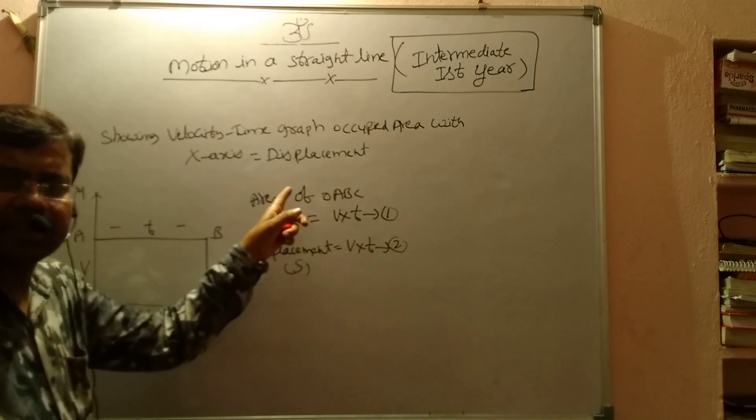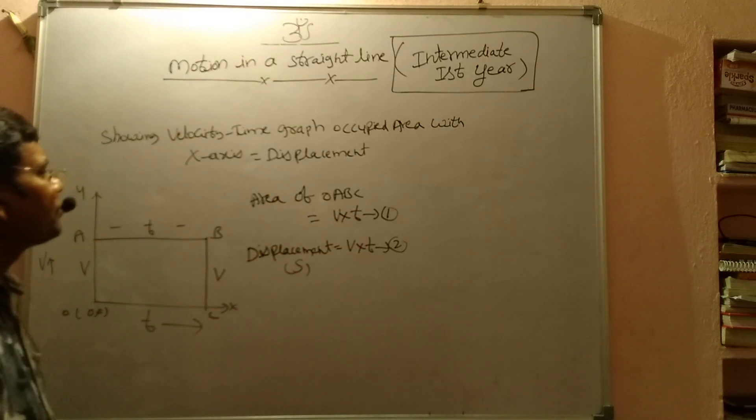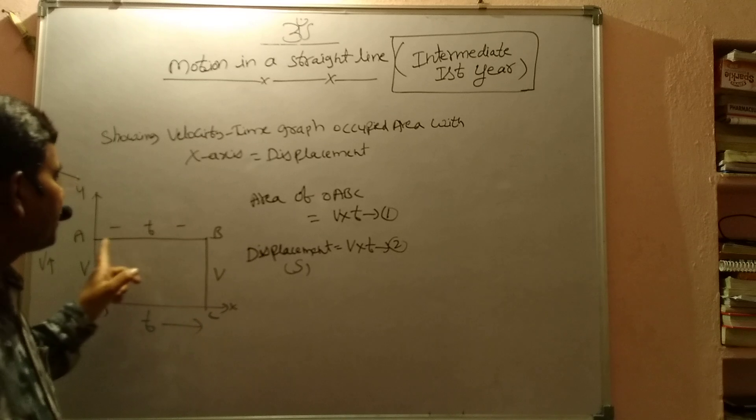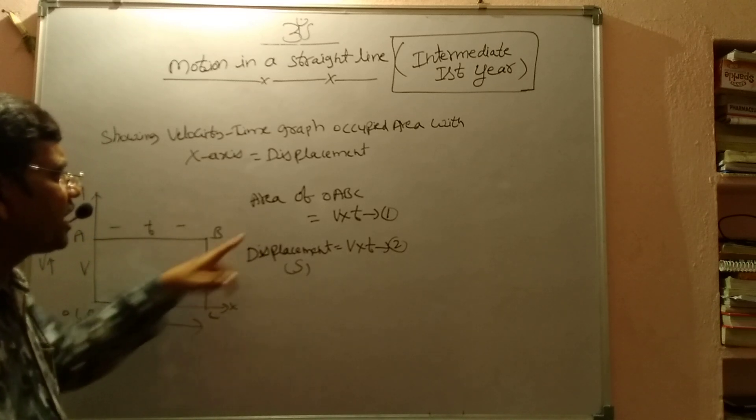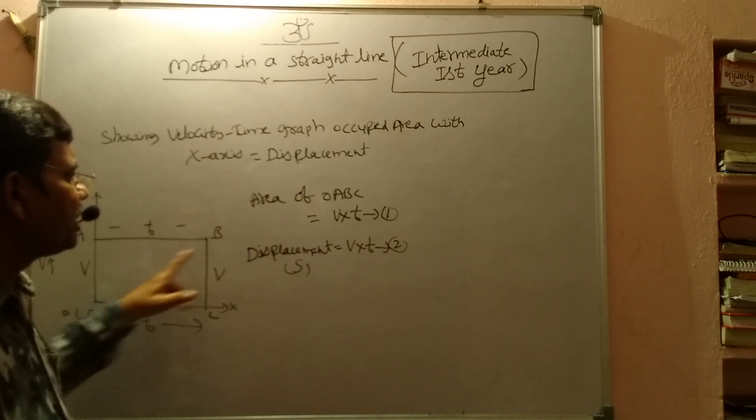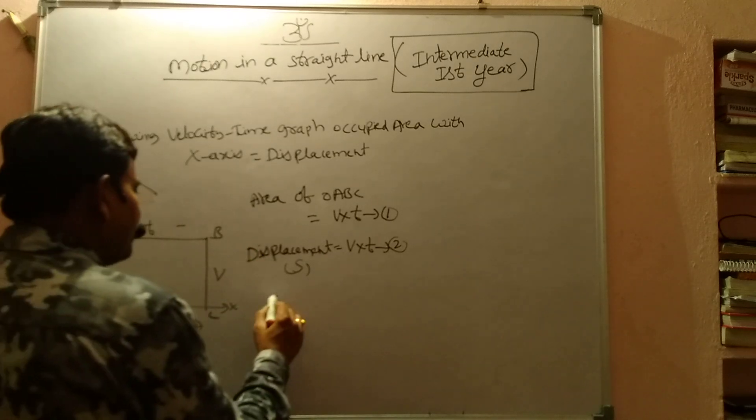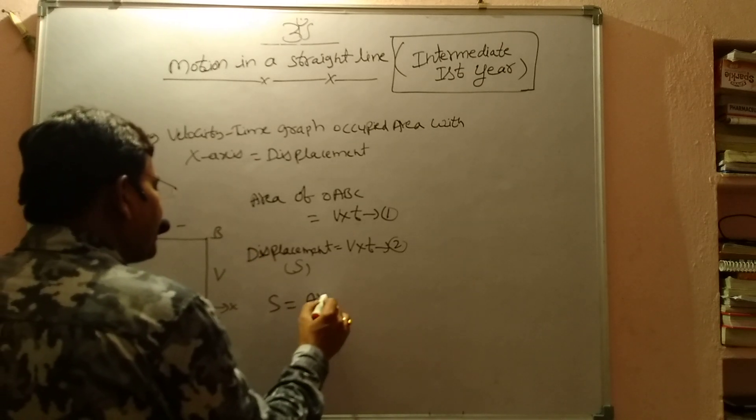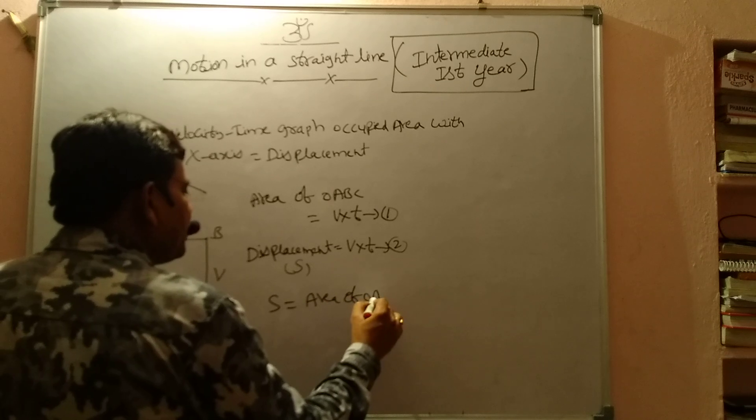Right hand side equals, so automatically left hand side also equals. So velocity time graph occupied area with x-axis, that is OaBc area, equals displacement. Displacement equals area of OaBc.